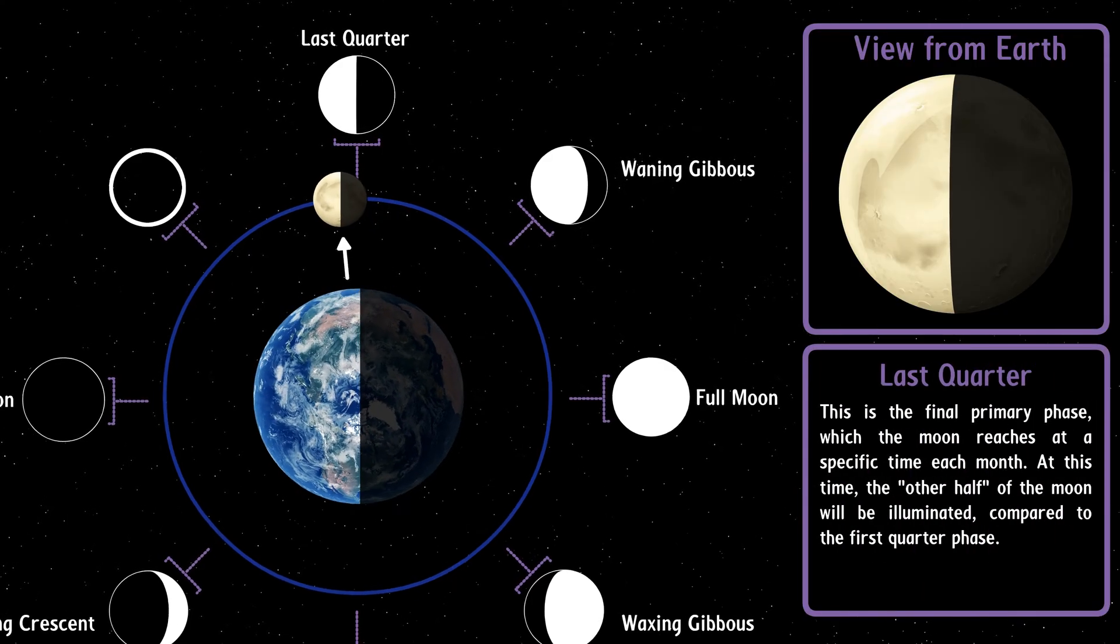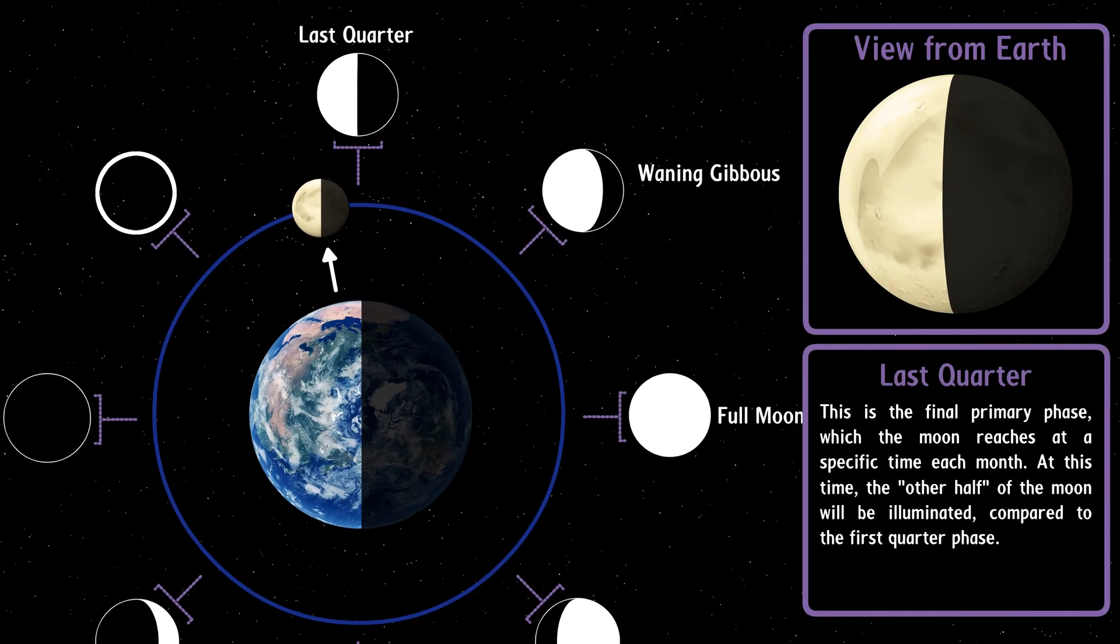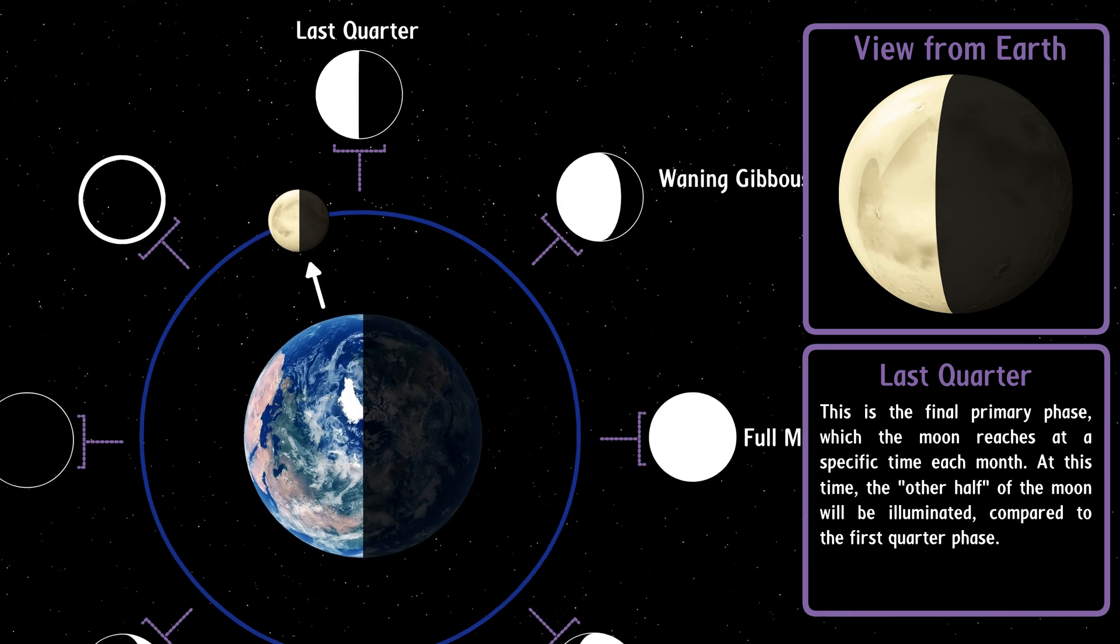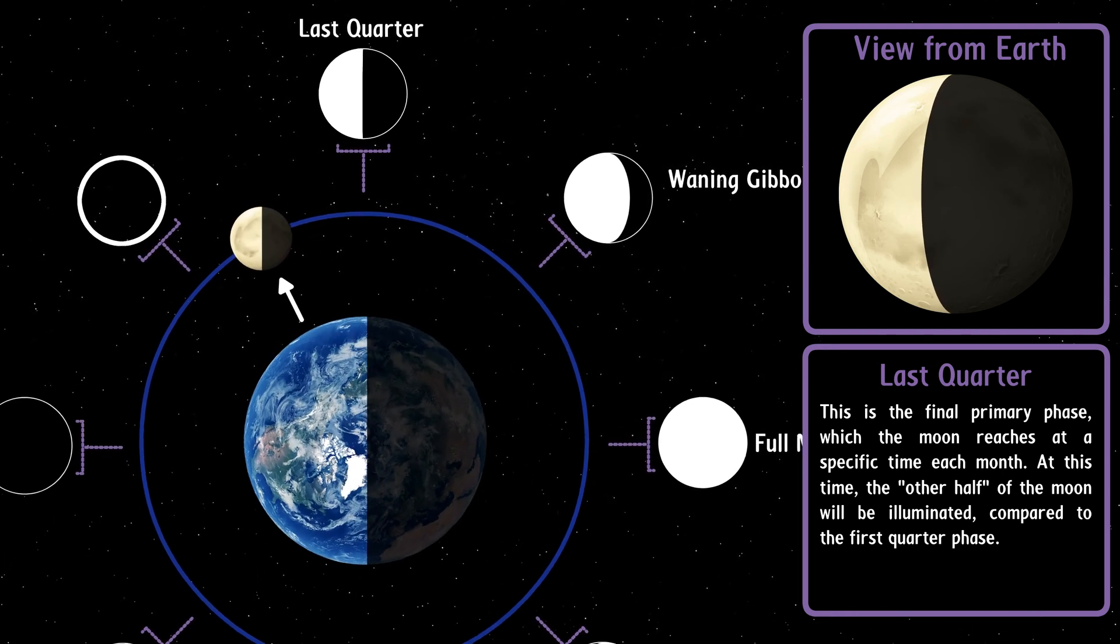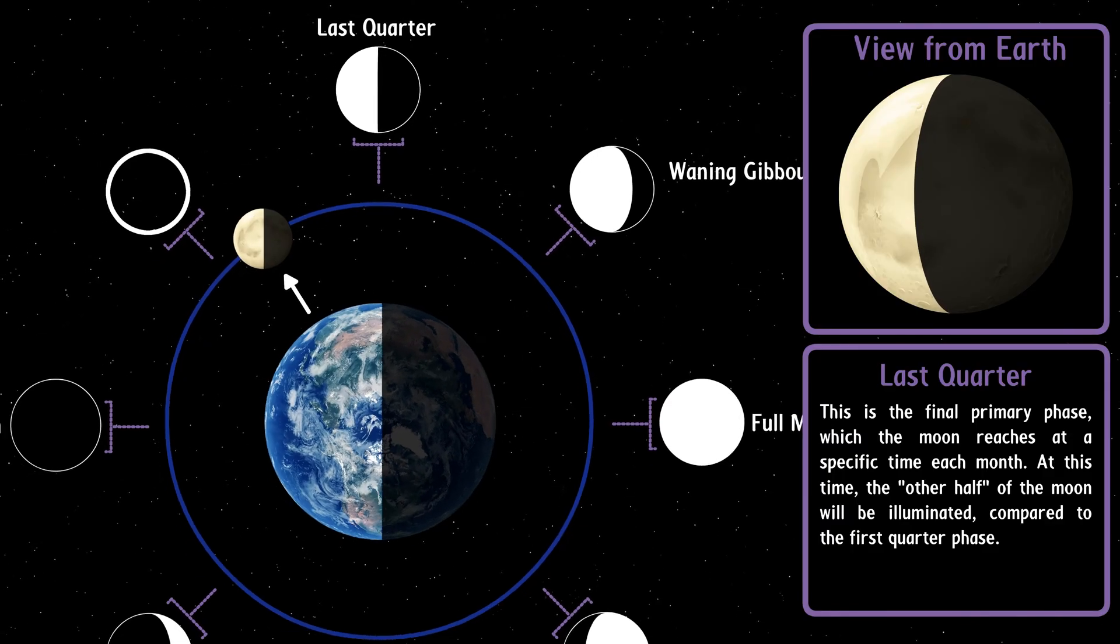Last quarter. This is the final primary phase, which the moon reaches at a specific time each month. At this time, the other half of the moon will be illuminated, compared to the first quarter phase.